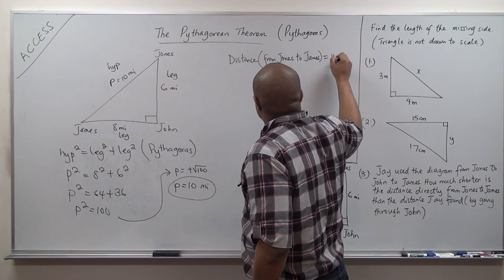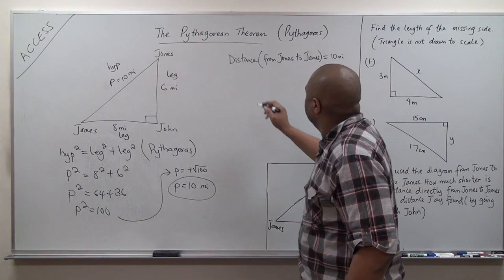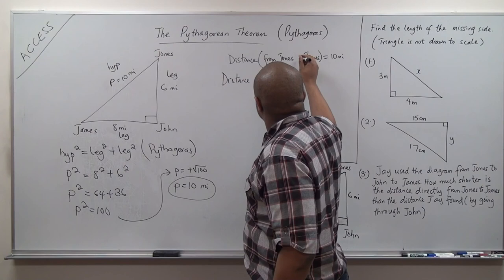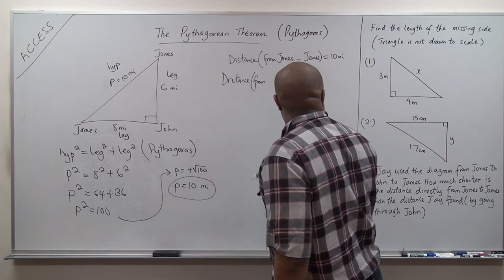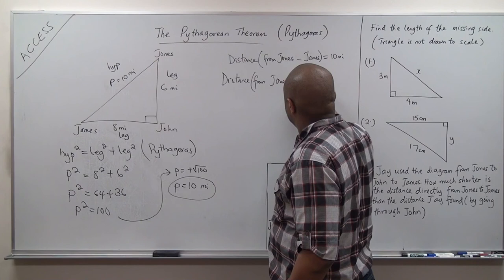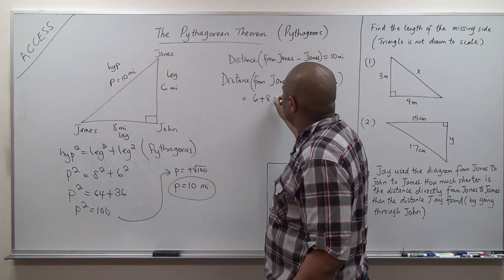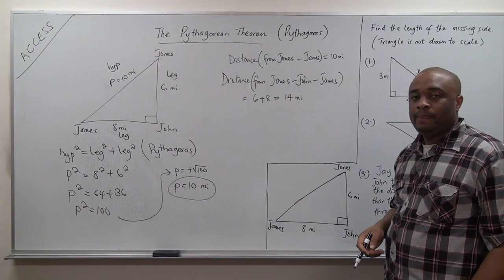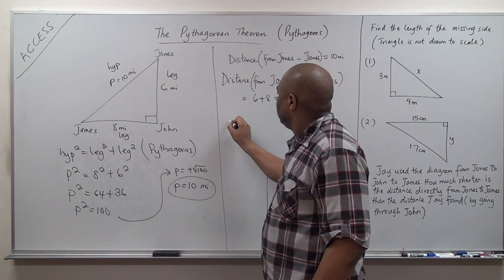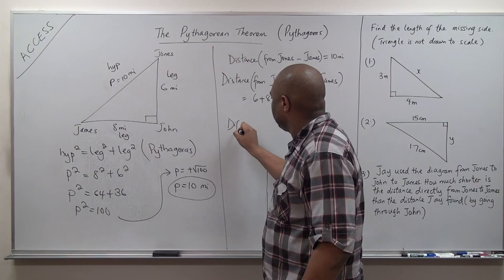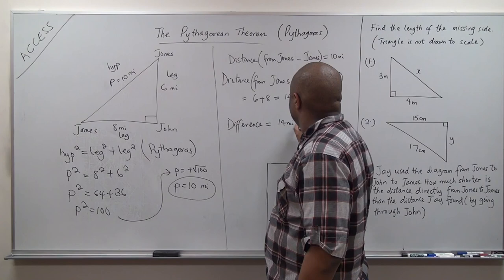Distance from Jones to James directly is 10 miles. Distance from Jones to John to James equals 6 plus 8, which is 14 miles. The difference — how much shorter — is 14 miles minus 10 miles, which is 4 miles. So the direct route is 4 miles shorter.